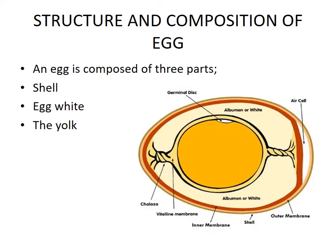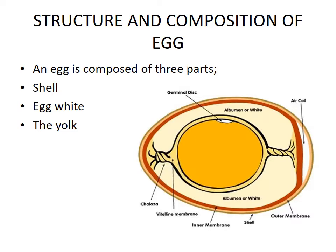Structure and composition of an egg. An egg is composed of three main parts: one is the shell, number two is the egg white, and number three is the yolk, as you can see on the diagram.